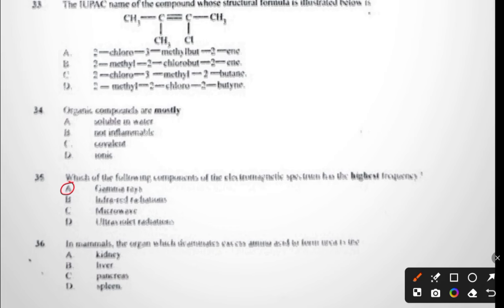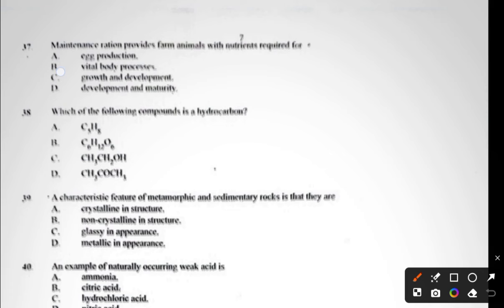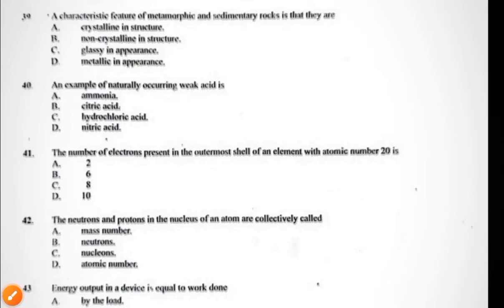Question thirty-seven: maintenance ration provides farm animals with nutrients required for production, vital body processes, growth and development, or development and maturity. The answer to question thirty-seven is C, growth and development. Question thirty-eight: which of the following compounds is a hydrocarbon? The one which is a hydrocarbon contains hydrogen and carbon only.